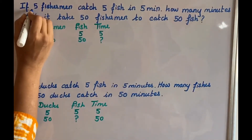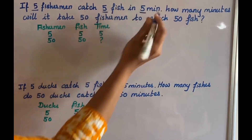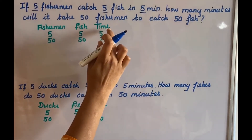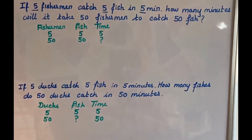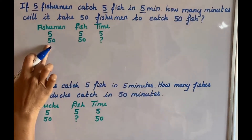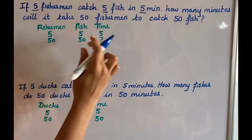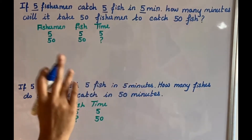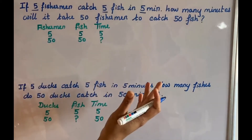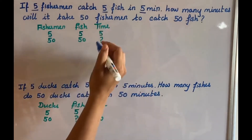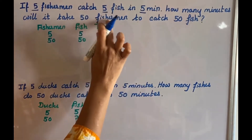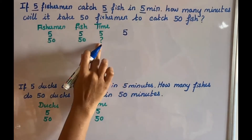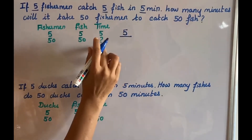Five fishermen catch five fish in five minutes. So when the number of fishermen is five, the number of fish is five and the time taken is five minutes. Then, how many minutes will it take for 50 fishermen to catch 50 fish? We have to find the time. The unknown is the time, so let's take that as x.